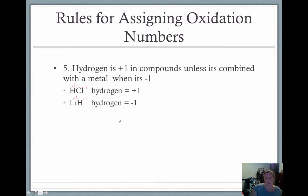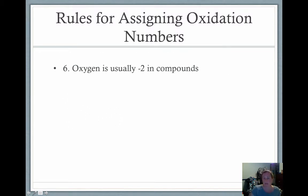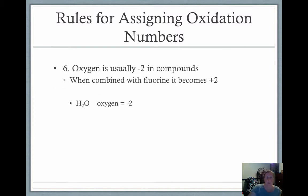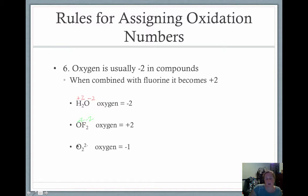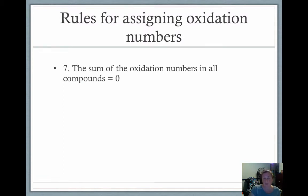Oxygen is usually minus two in compounds, except when combined with fluorine, when it becomes plus two. In water, oxygen is minus two and hydrogen is plus one with two hydrogens totaling plus two. When oxygen is combined with fluorine, fluorine has a minus one charge — two of them make minus two — so oxygen becomes plus two. In peroxides, the overall charge is minus two with two oxygens, so each oxygen is minus one.